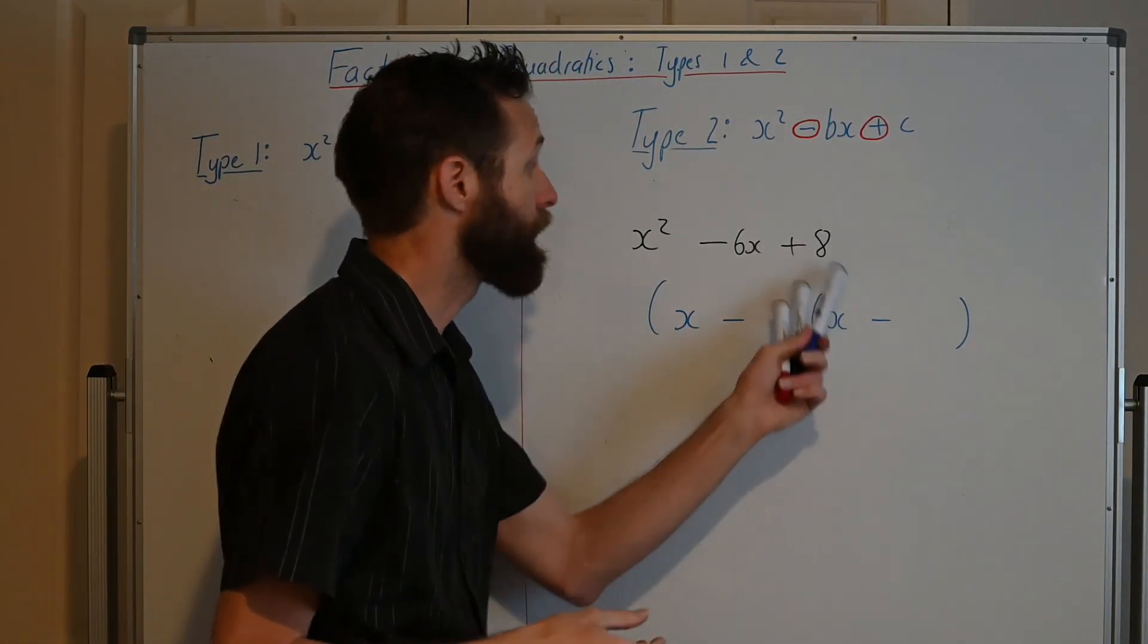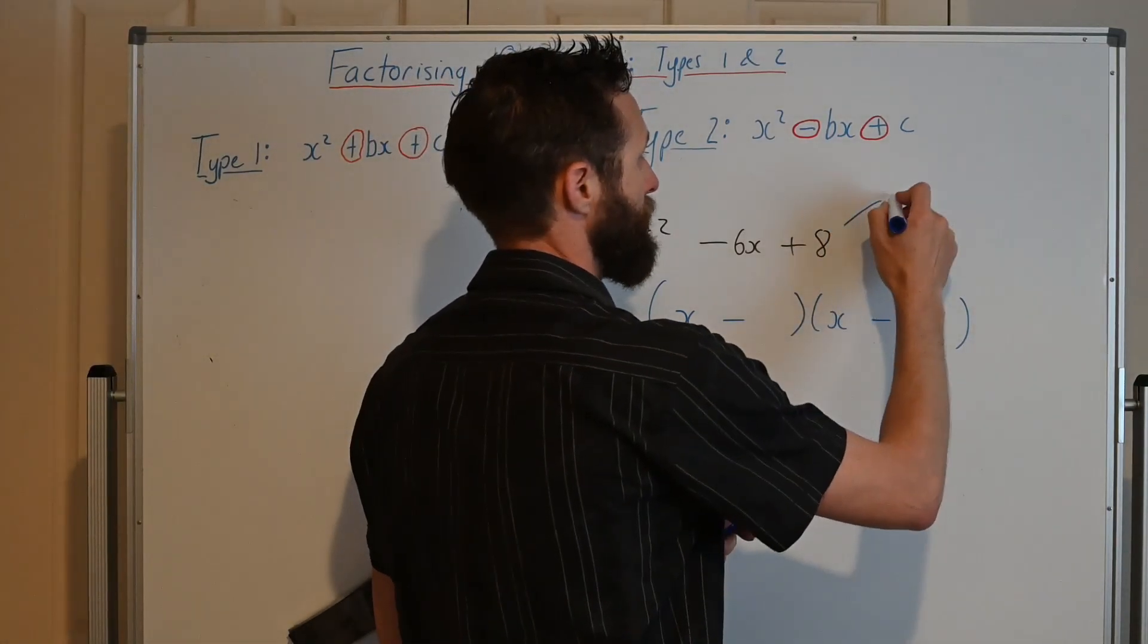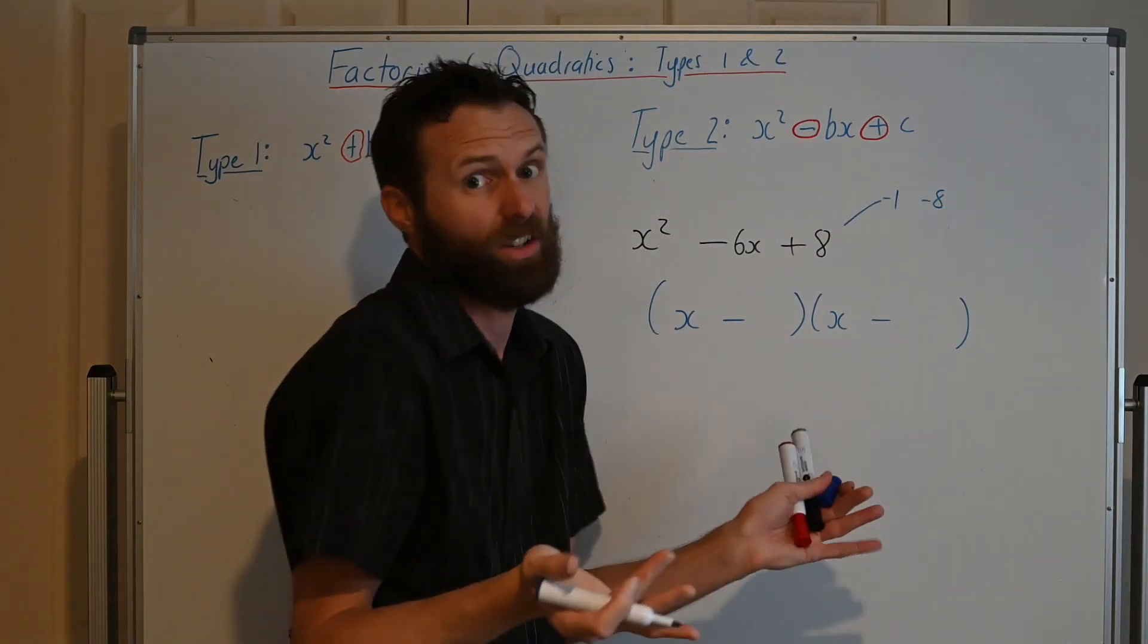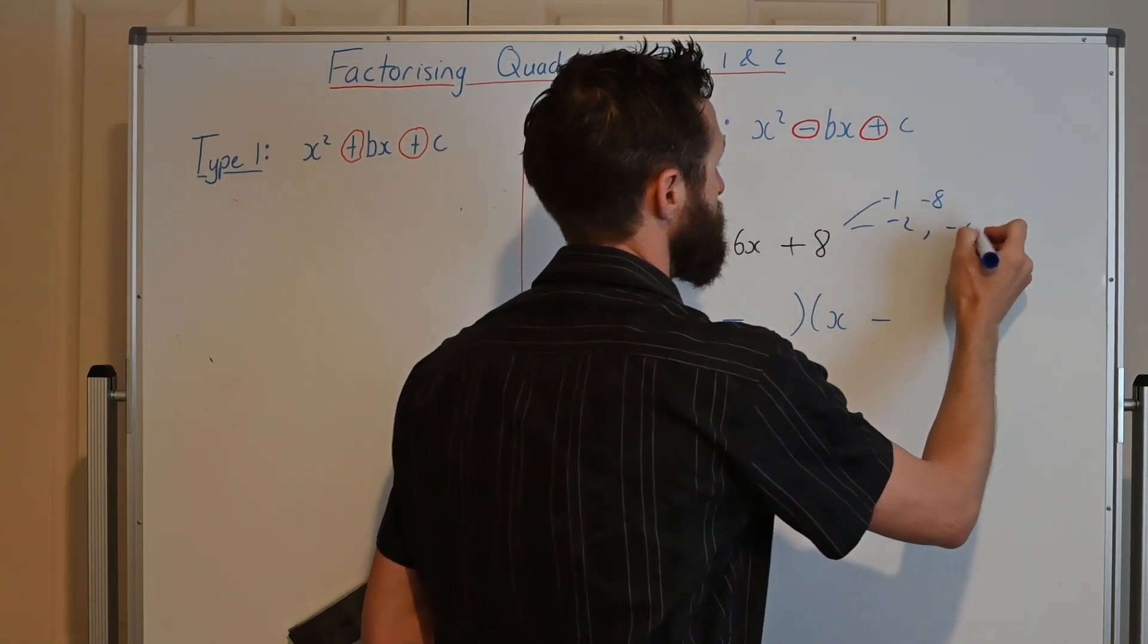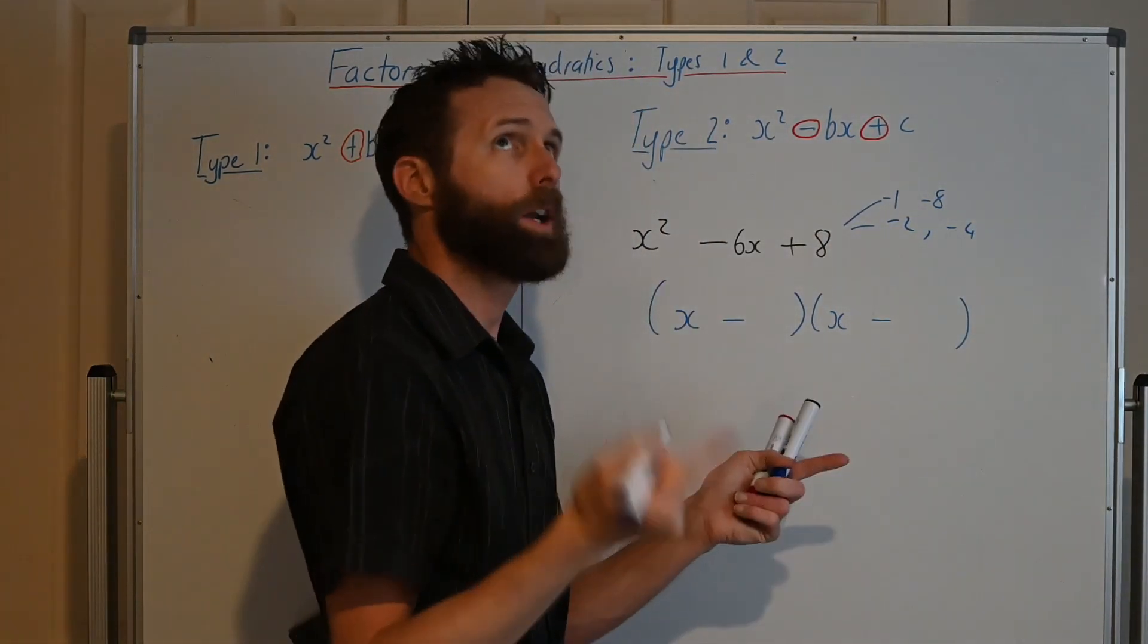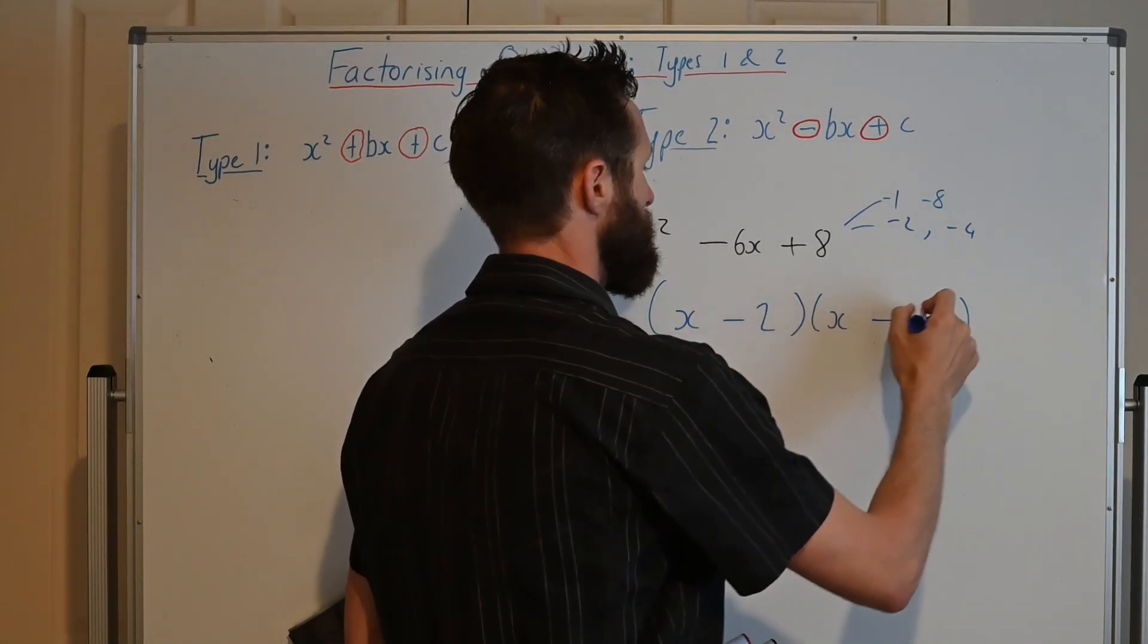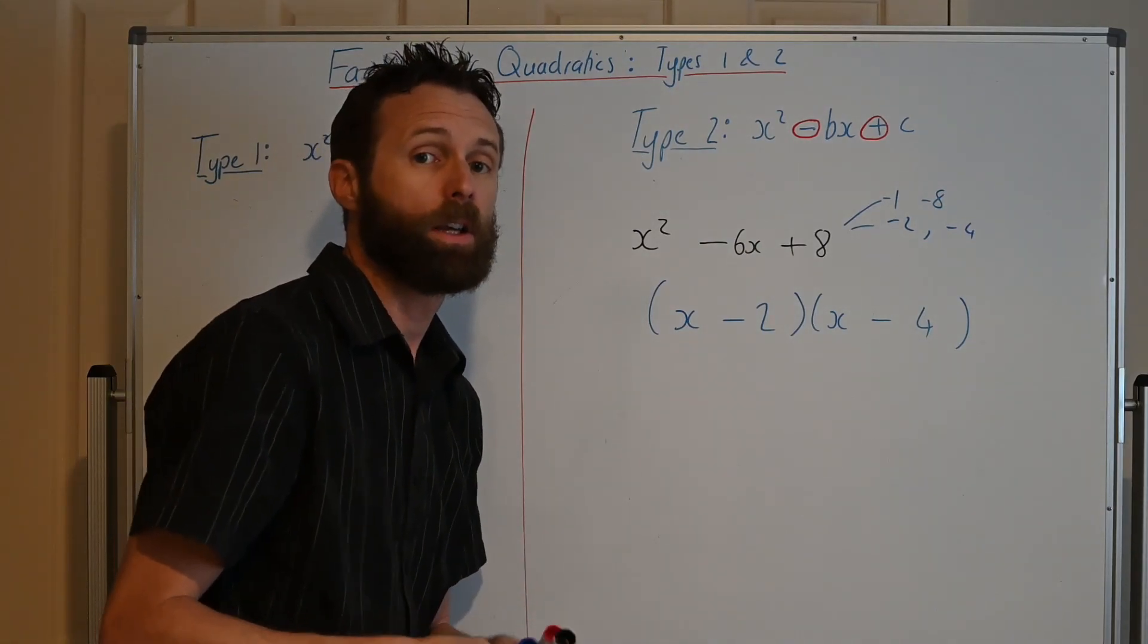Now, what we do again is we look at this last number here and think about all of the factors. Well, obviously you've got 1 and 8. So minus 1, minus 8, but that adds to minus 9, so that's not going to work for us. Then we've got minus 2 and minus 4. Minus 2 and minus 4, that adds to minus 6. So there we go. Minus 2, minus 4, and that would be this one factorized. Let me give you one more.